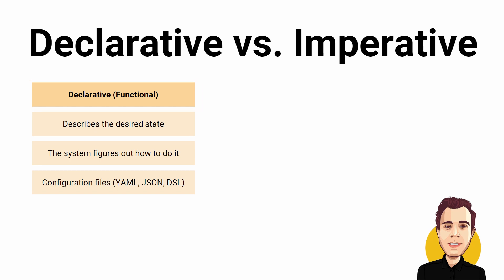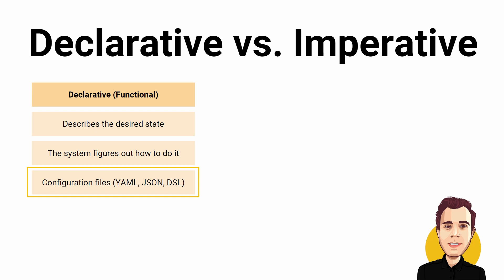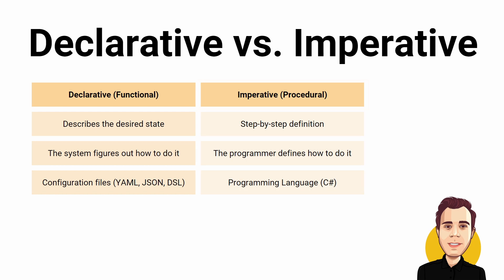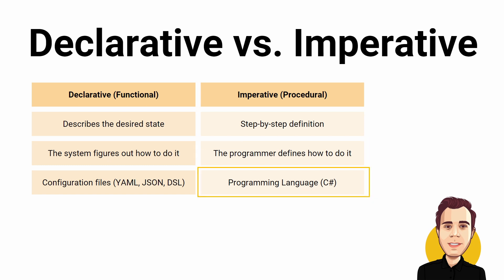Let's take a look at the two main groups of available Infrastructure as Code tooling. Declarative or Functional uses a defined syntax to describe the desired state of the resources; the system will figure out how to get to that state. This approach usually uses configuration files such as YAML or JSON. Imperative or Procedural uses a step-by-step definition to define the resources — we describe what the system needs to do to get to the desired state. This approach usually uses program code such as C# or other programming languages.